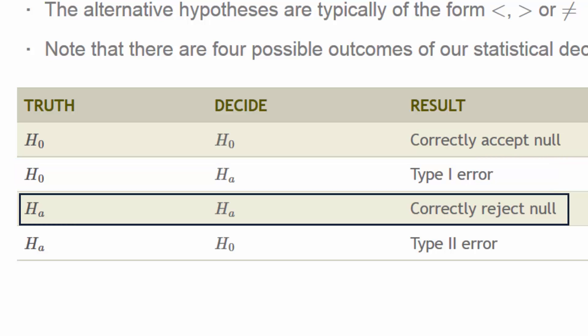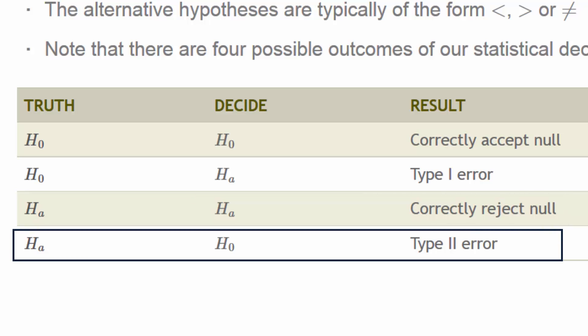If the truth is Hₐ and we conclude Hₐ (reject the null hypothesis), then we have correctly rejected the null. And if the truth is Hₐ and we decide H₀, we've made what is called a Type II error.